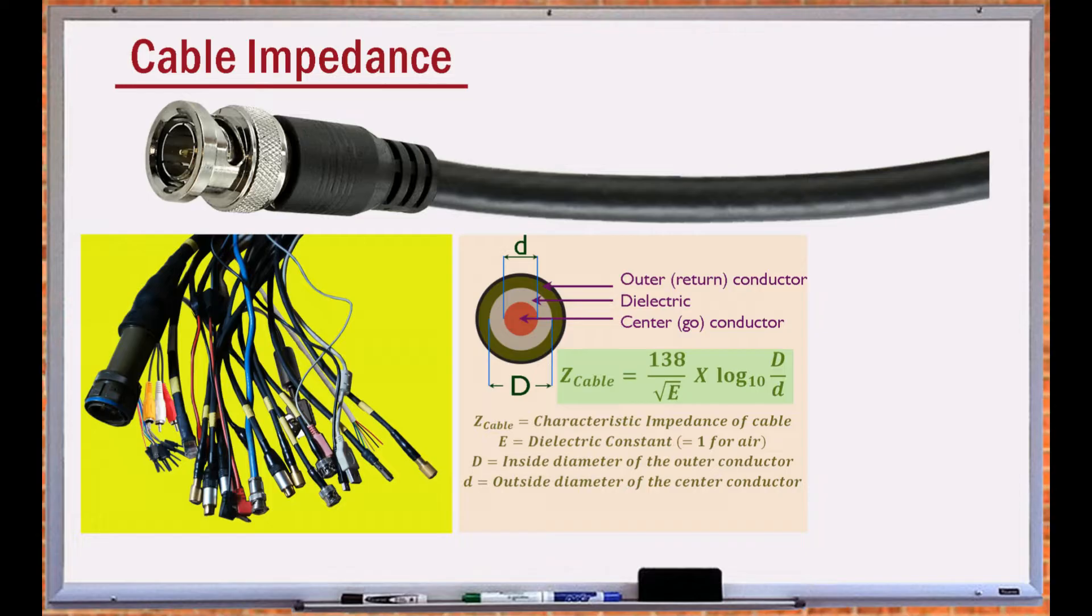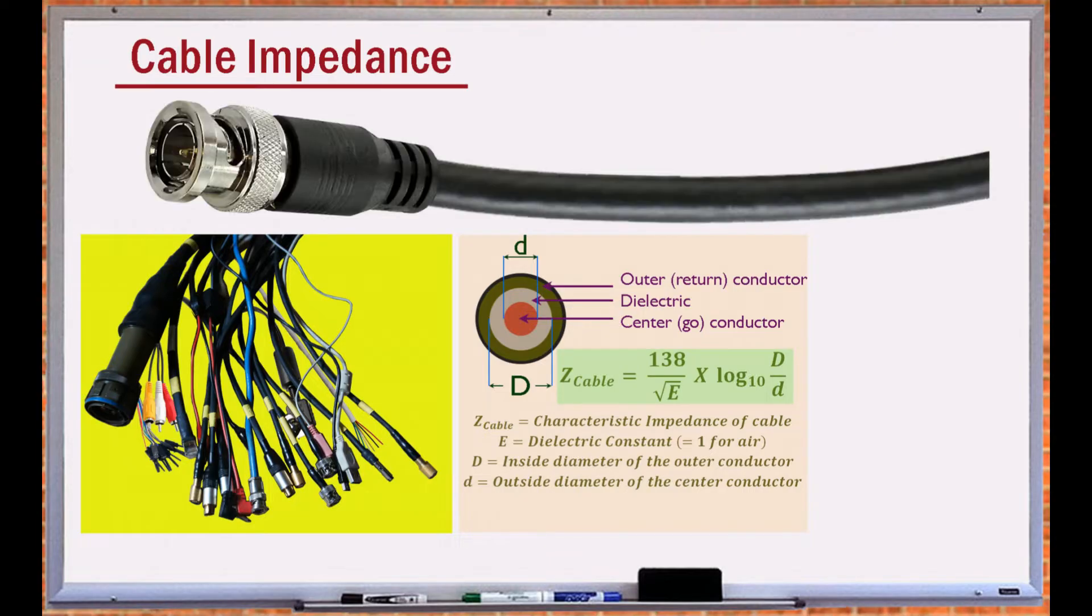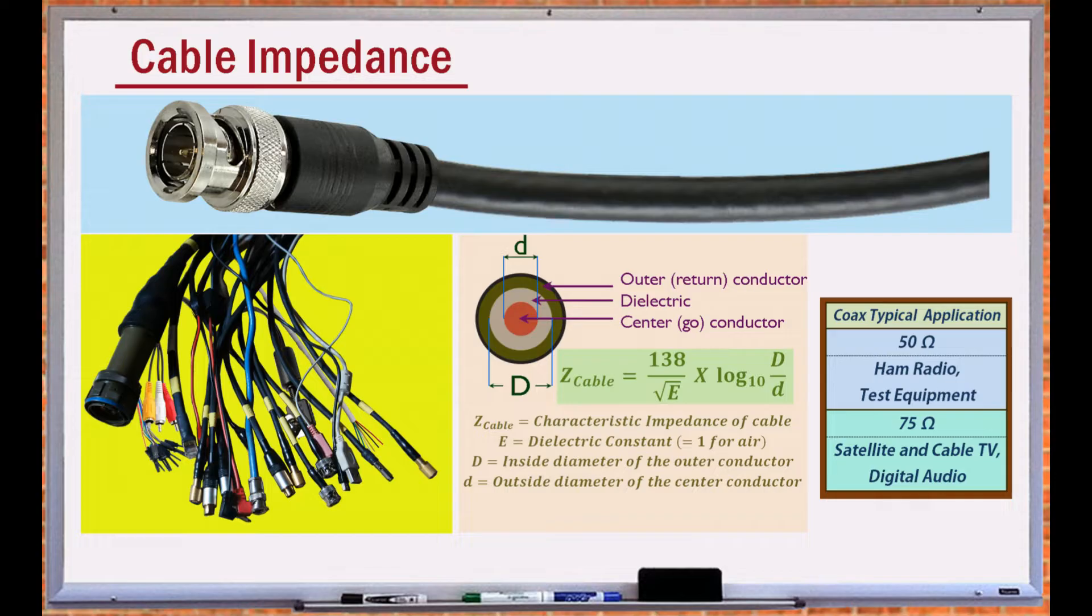A coaxial cable or coax is comprised of a center conductor enclosed by a metallically shielded dielectric material, inside a plastic tubing. Cables are available in several characteristic impedances, each optimized for a specific application.